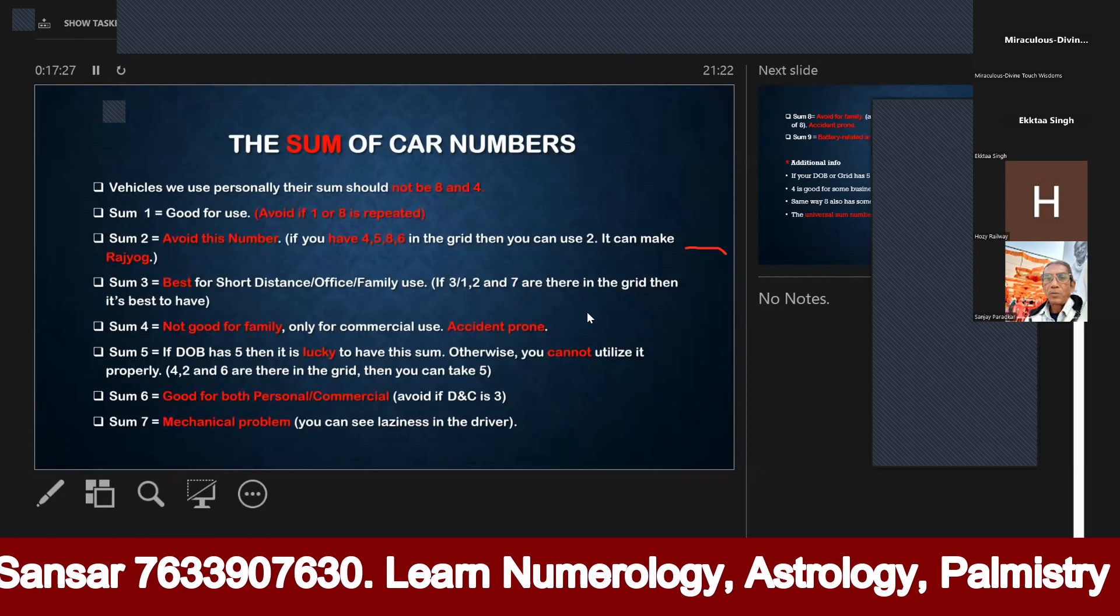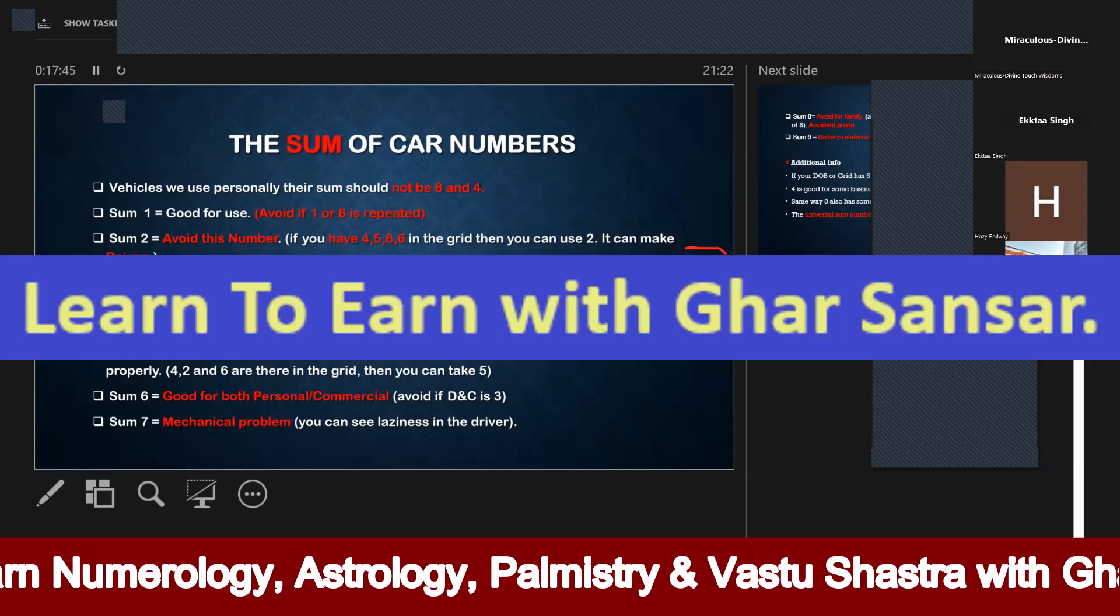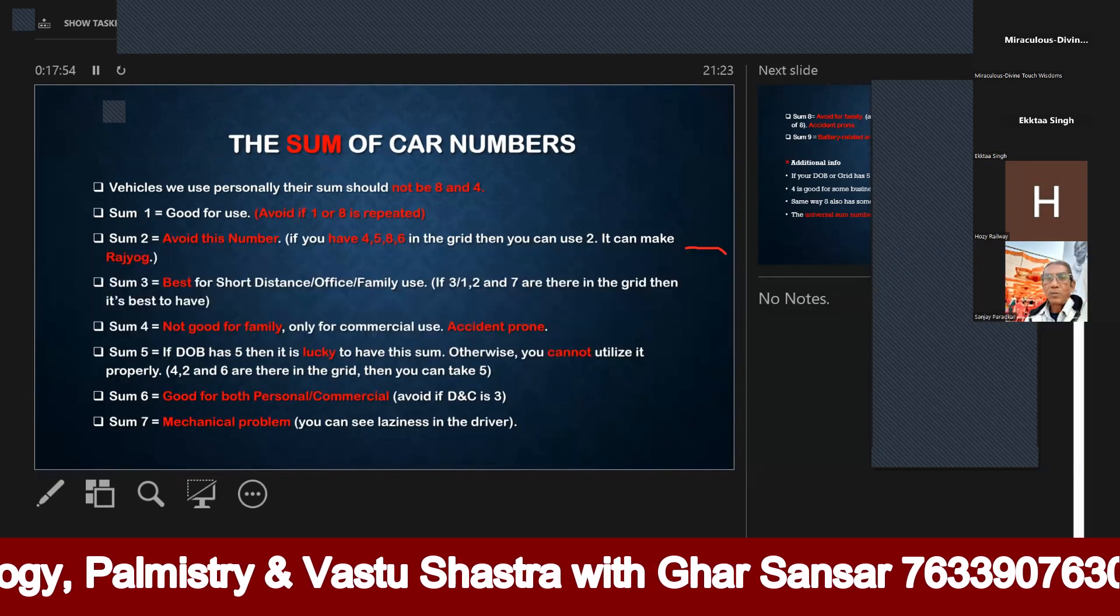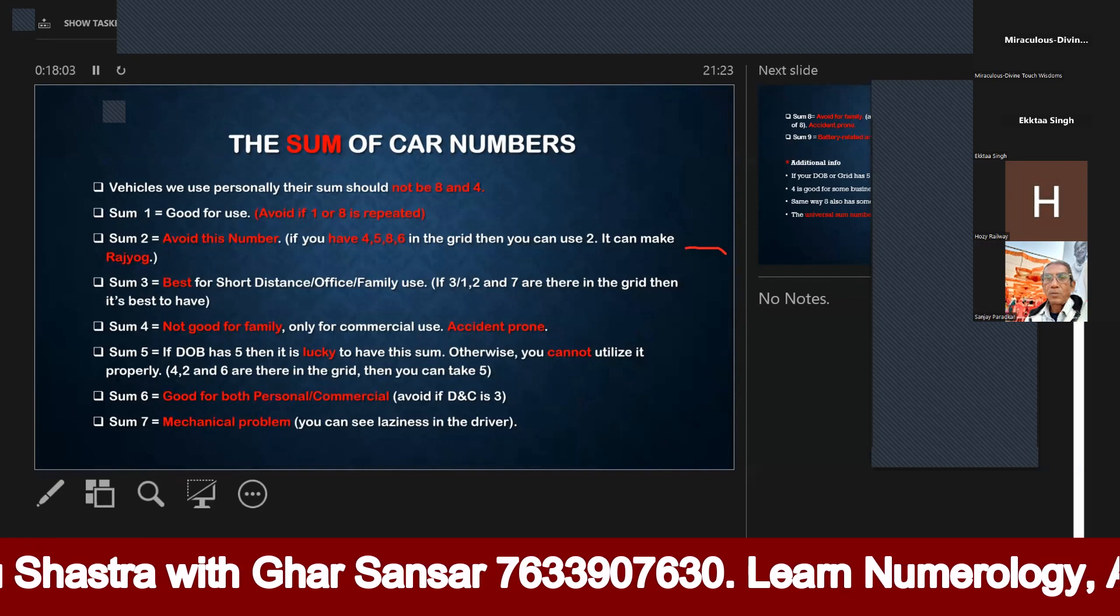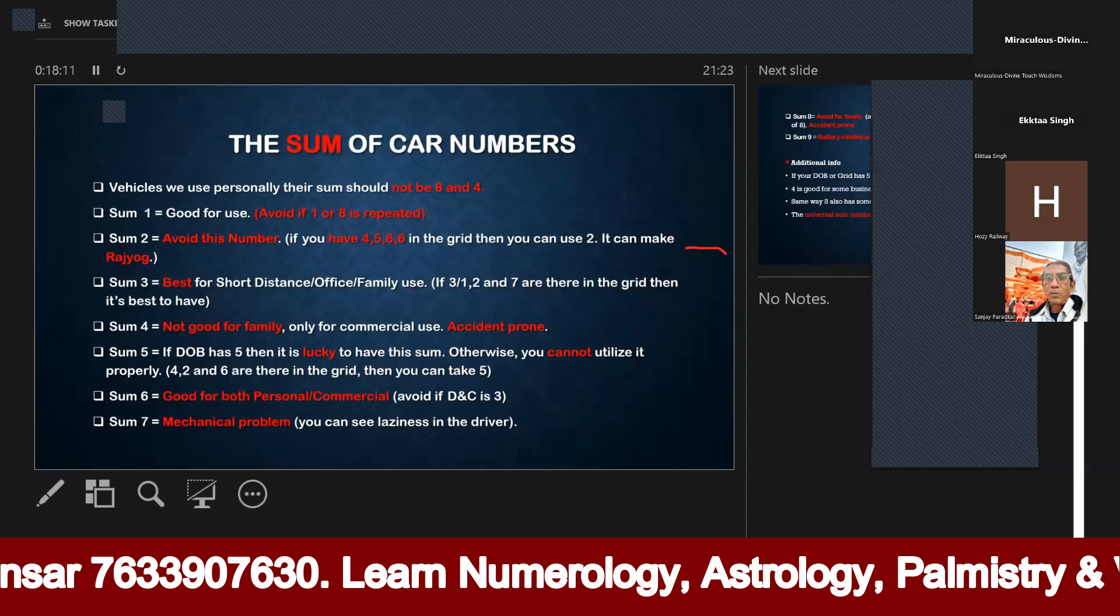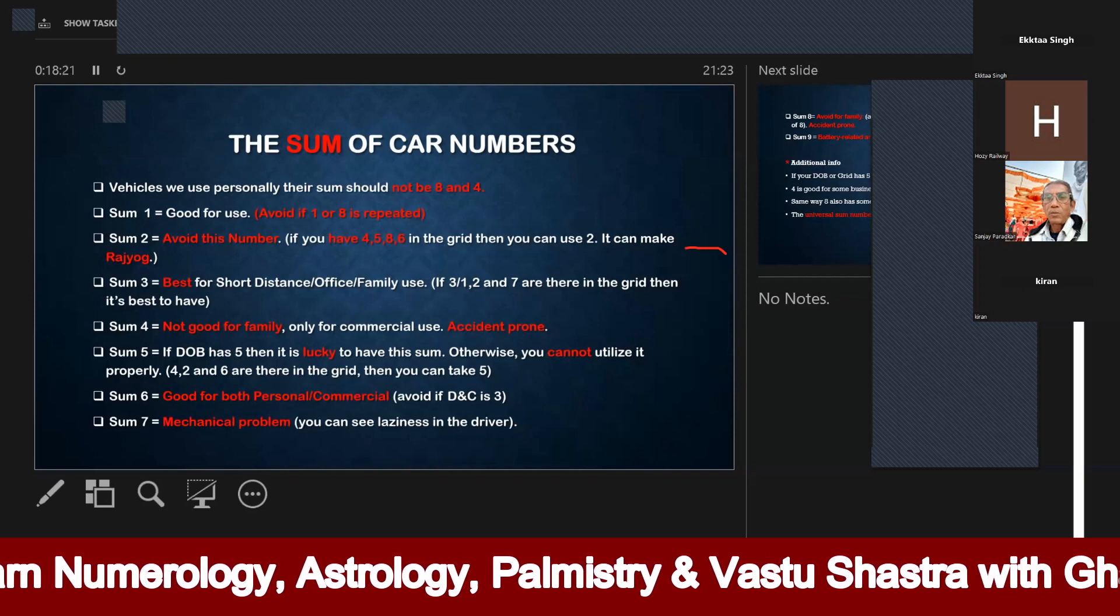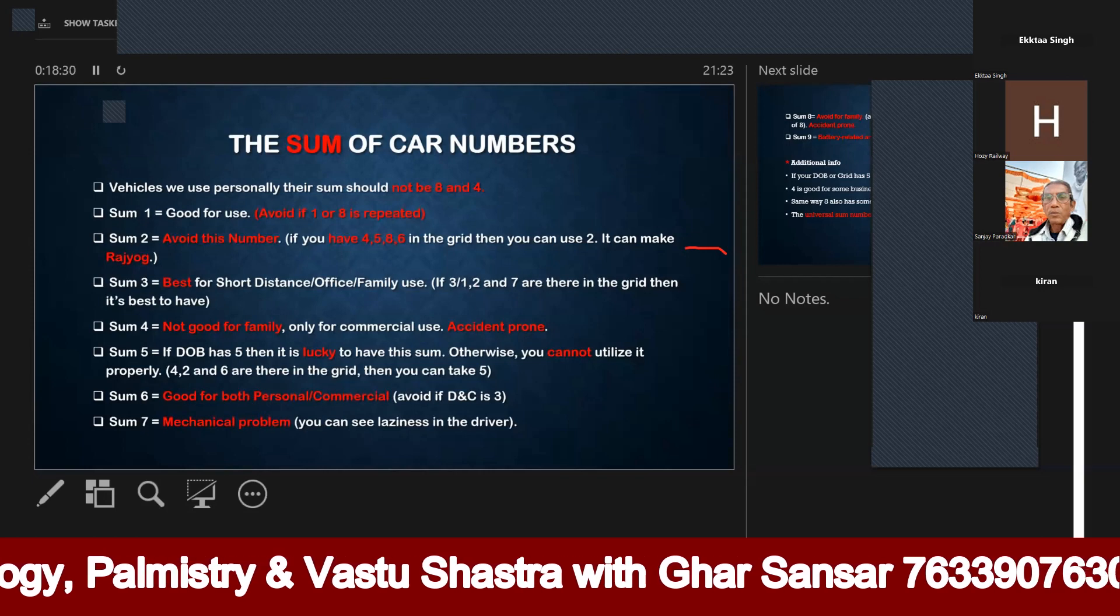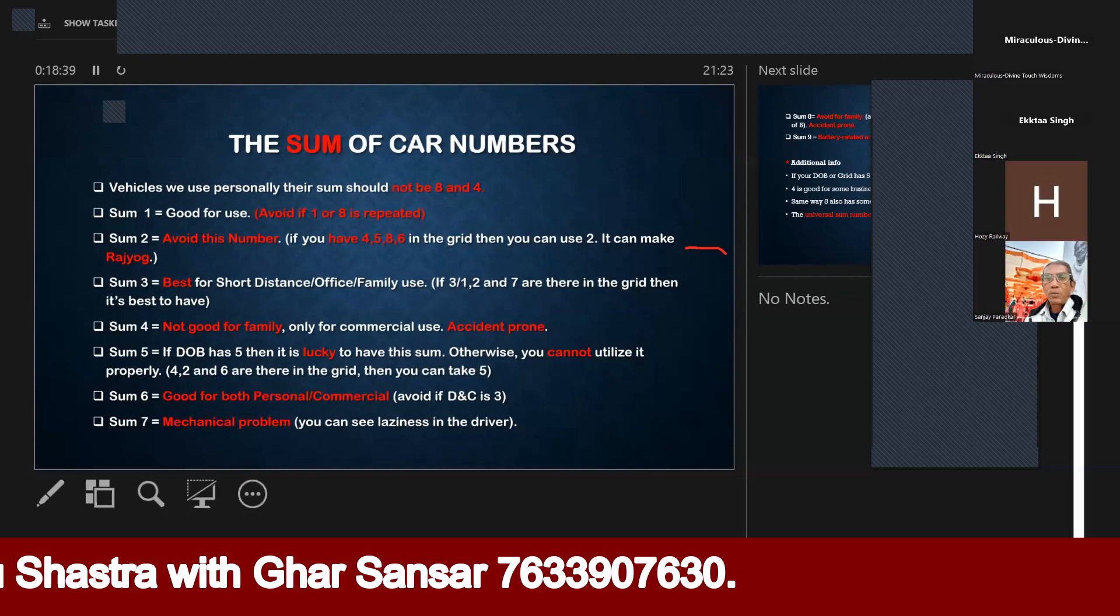Someone has a car, then sum number 5. Now next is sum number 5. The sum number 5 is a universal number. You can get sum number 5. But if it is 5, then it is a good number.